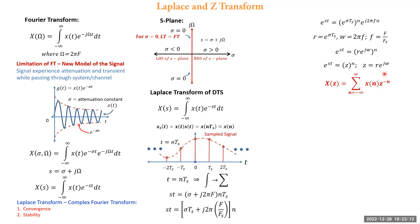On the right-hand side the equation is evaluated with respect to n and becomes a function of z. Therefore the left-hand side term X(s) gets transformed to X(z), and we arrive at a new equation called the Z-transform.